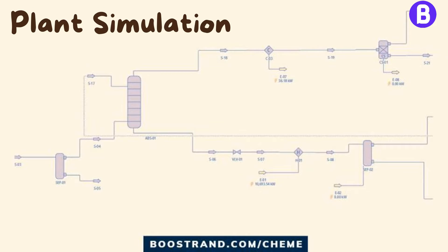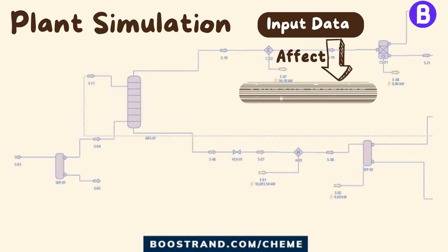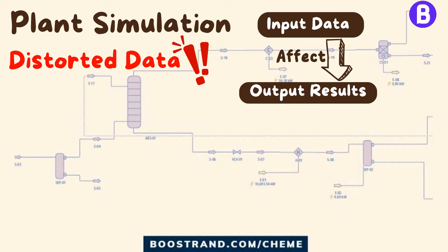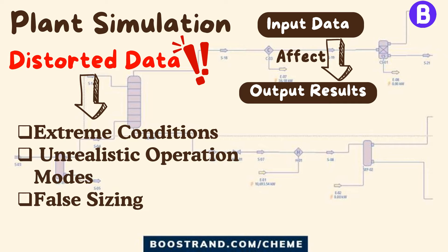When carrying out process simulation, we must handle the input data with high care. This is because the data we input to our model will highly affect the output results. If we enter exaggerated or distorted data, this can lead to extreme conditions that are difficult to handle by equipment or lead to modes of operation that won't occur in reality, which may lead to a plant that is sized based on false data.